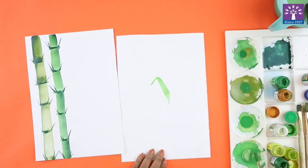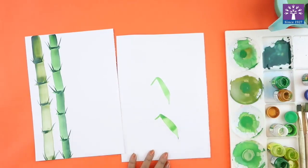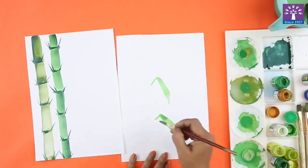Like this. See, now press the brush and then again turn it into a point. So when you want to draw the leaves which are going down, you will follow this technique.